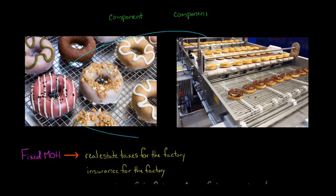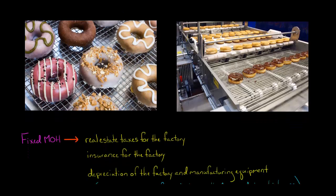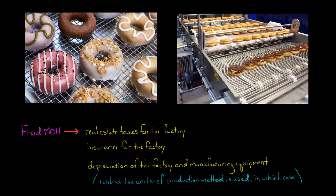Any insurance that you get for the factory — so you get some insurance in case the factory were to burn down — the cost of that insurance, like the real estate taxes, is not going to change whether you make 1,000 donuts, 1,100 donuts, or 1,200 donuts. It's not going to change.